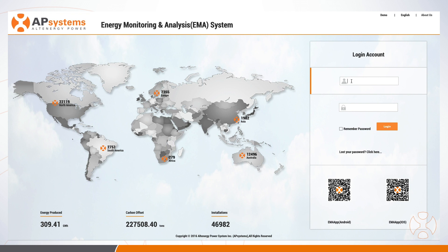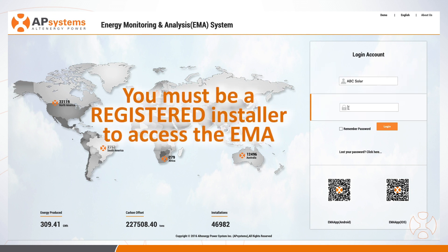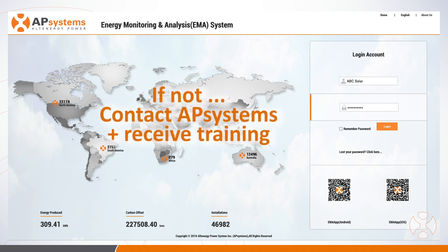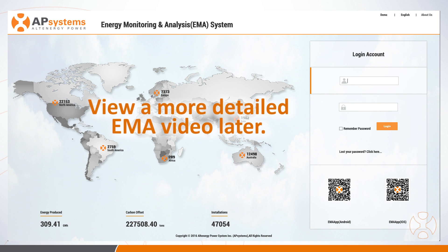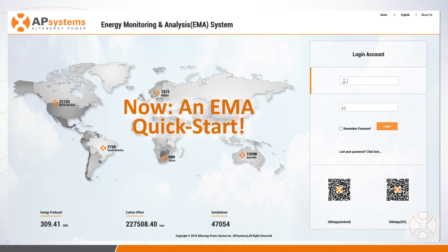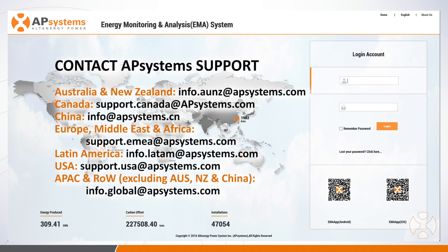Installers must log into the AP Systems EMA site at apsystemsema.com. If you don't have an account or are unfamiliar with how to navigate the EMA site, you must contact AP Systems to request a professional installer account and receive training. More on the EMA will be covered later in our detailed EMA video. We encourage installers unfamiliar with this process to contact our technical support team for further training.